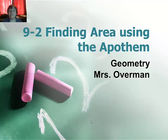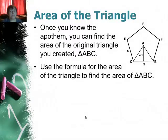Now we're going to finish up our notes by using the apothem to find the area of a regular polygon. Taking the example before, we have 6 for the side and the 4.1. So once you know the apothem, you actually can find the area of the original triangle.